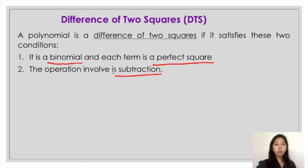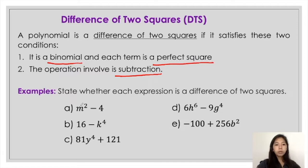So let us try these examples. For the first example, this consists of two terms, so that's already a binomial. Now checking each of the terms, m squared is a perfect square, and 4 is also a perfect square. So the first condition is satisfied. For the second condition, the operation must be subtraction — which in this case, it is subtraction. So therefore, the first given is a difference of two squares.